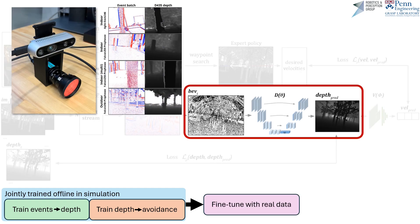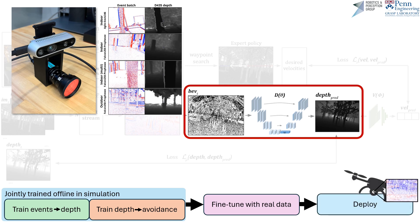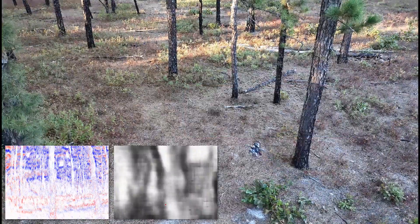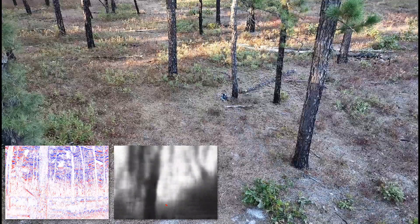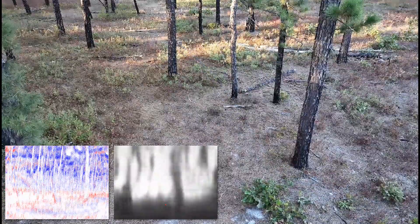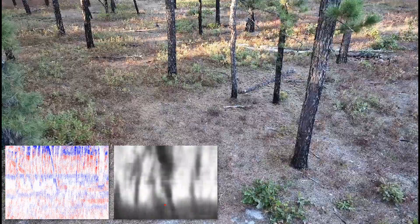Our method allows us to fine-tune the pre-trained perception network with real-world data consisting of synchronized and calibrated events and depth. After this, we can deploy on our robot to avoid real-world obstacles. For the first time, we successfully transfer an events-to-control policy from simulation to real-world continuous robot control for obstacle avoidance.